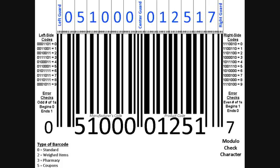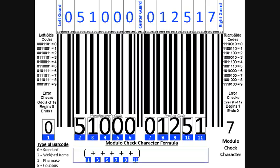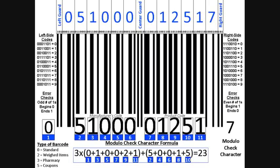When the computer scans the barcode and processes the numbers, it needs a final way to know that it read and processed everything correctly, so it performs a calculation and comes up with the modulo check character. The formula is based upon the positions of each of the numbers at the bottom of the barcode. It first adds up the digits in the odd-numbered positions, then adds up the digits in the even-numbered positions, multiplies the odd-numbered digits by three, and adds that to the sum of the even-numbered digits. Plugging in the numbers from our barcode, we come up with a total of 23. We then subtract the result from the next highest multiple of 10 — so 30 minus 23 is 7 — confirming we have read the barcode correctly. So now you've learned barcodes in one lesson.